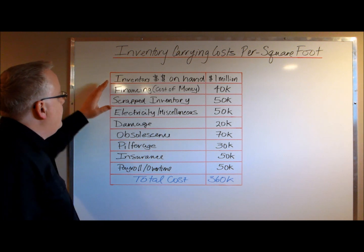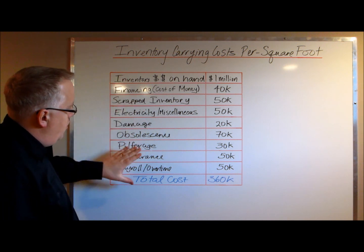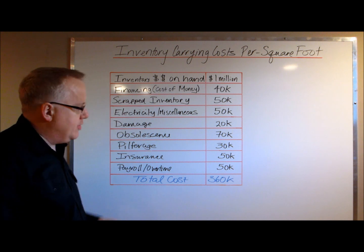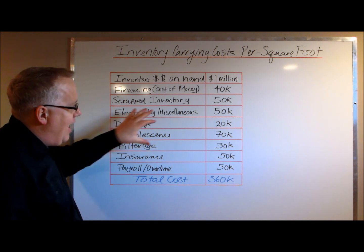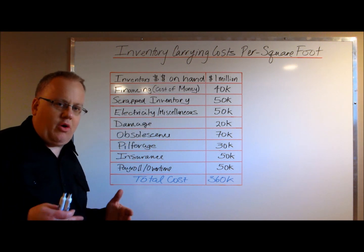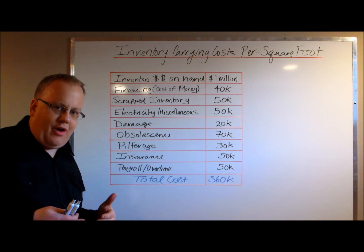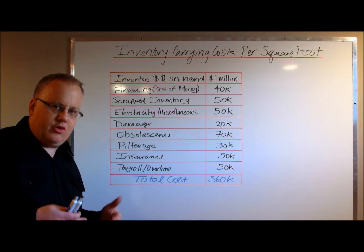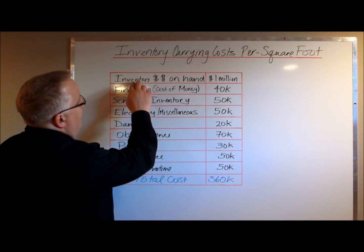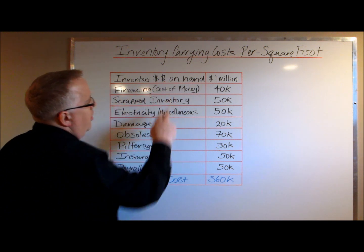I'm going to go through this table and show you what these inventory cost drivers are, how you go about defining your monthly inventory carrying costs, and then defining what your carrying costs are per square foot. In this example, this company has accounted for the inventory value on hand, and this value is a monthly amount.